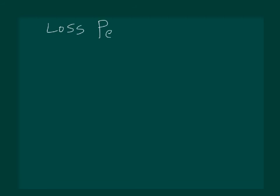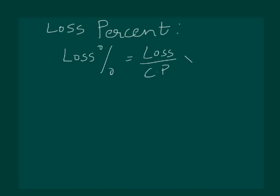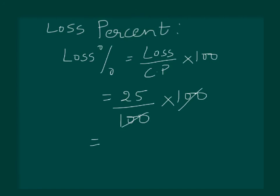Let's try and understand loss percent. The formula for loss percent is: loss in rupees divided by CP, multiplied by 100. Consider our pencil example in which we had made a loss of 25 rupees. Substituting the values: 25 rupees loss divided by cost price of 100 rupees, multiplied by 100. We find out that we had made a loss of 25%.